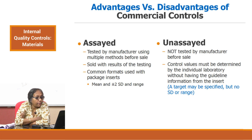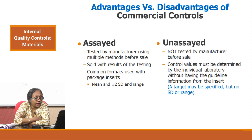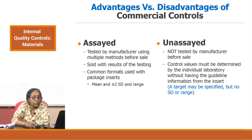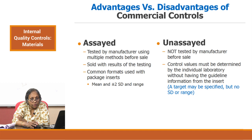Assayed controls are tested by the manufacturer using multiple methods before sale, and they are sold with the results of the testing. The common format used is package inserts which give you the mean, standard deviation, and range. Whereas in unassayed controls, these are not tested by the manufacturer, or if they are tested, they are only partially tested. Control values must be determined by the individual laboratory without having guideline information from the insert. In some unassayed controls, they define the target but the standard deviation is not defined, so the onus is upon the laboratory to determine the standard deviation before the control is used to monitor the analytical systems.